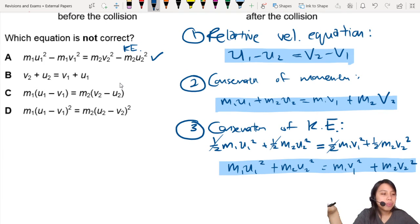Let me scroll this up so it's not behind my head. And let's look at B. V2 plus U2. Okay, that's correct. This part is correct so far. V1 plus U1. Okay, that seems correct. Alright, so far so good. We are looking for what is not correct.